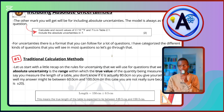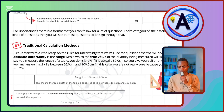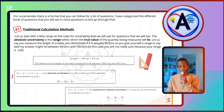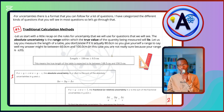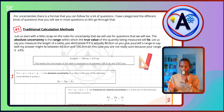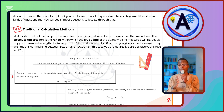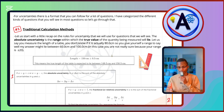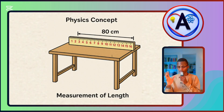Let's start with a recap on the rules for uncertainties that we'll use. An absolute uncertainty is a range within which the true value of the quantity being measured will lie. For example, if you measure the length of a table, you don't know if it's actually 80.0 centimeters.